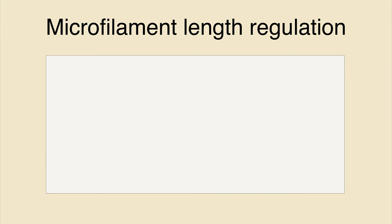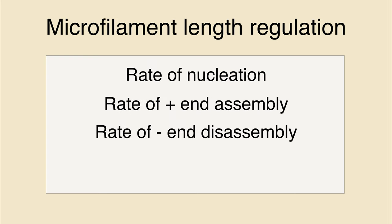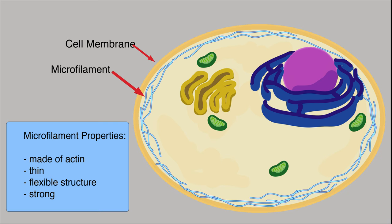Actin length can be altered by regulatory proteins that change either the rate of nucleation, the rate of actin assembly or disassembly, or the stability of the actin filament. As you can see, actin is a very dynamic filament that fills many unique functions in the cell.